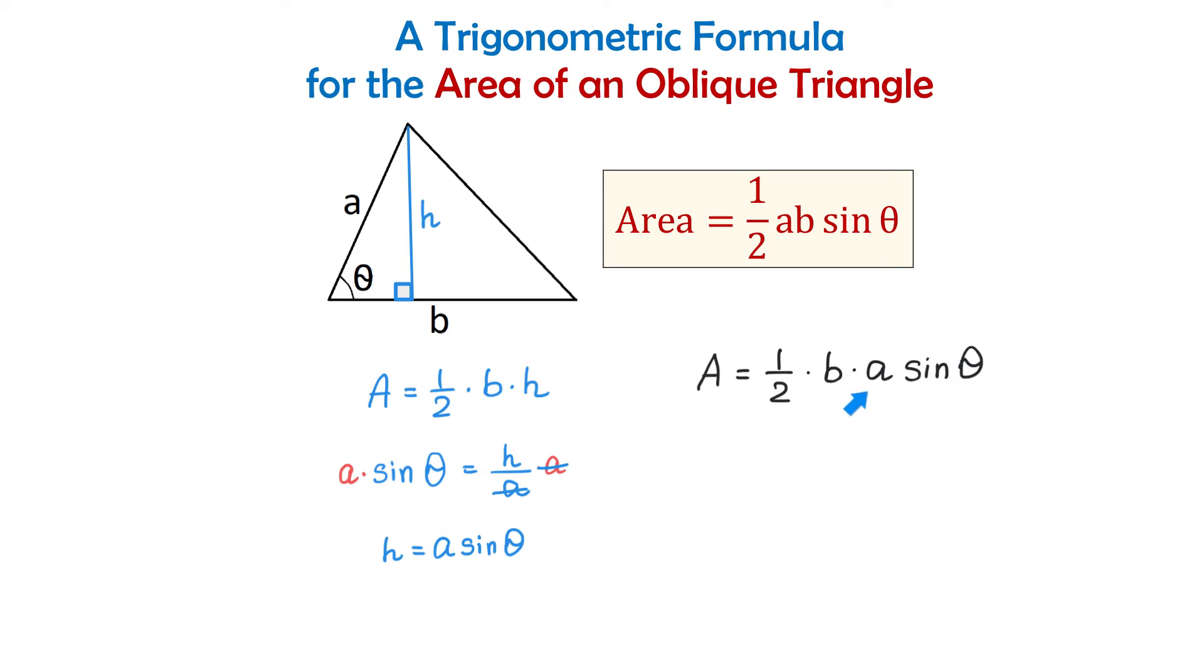And here if we interchange these two letters then we will get that the area equals one half times a times b sine of angle θ.